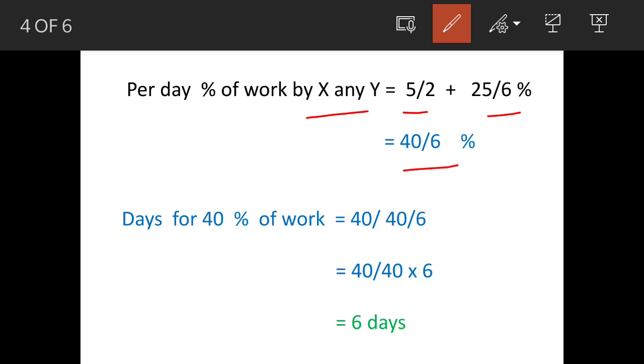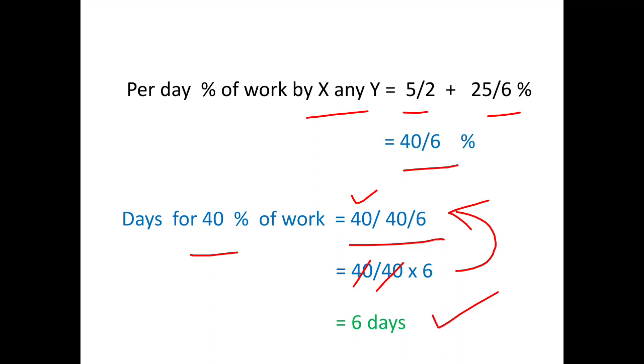So to do 40% work, how will we work this out? We'll divide 40% by daily work done. So if you put the figures like this, 40 will get cancelled and 6 will go to the numerator. So answer is 6 days. Hope it is clear. Answer is option A, 6 days.